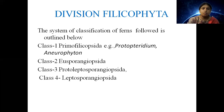The classification of ferns followed is outlined as four classes: Primophilicopsida, Eusporangiopsida, Protoleptosporangiopsida and Leptosporangiopsida. In detail, we will discuss all the classes in our next class. Thank you.